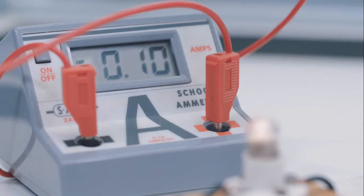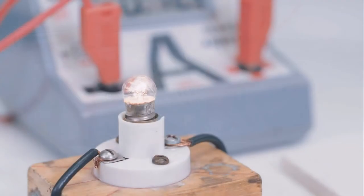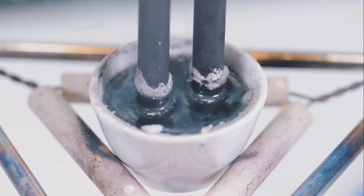The ammeter is now showing a reading and the bulb has lit up. This means that a current is now flowing in the external circuit and that electrolysis has begun. Bubbles of chlorine can be seen forming at the anode.